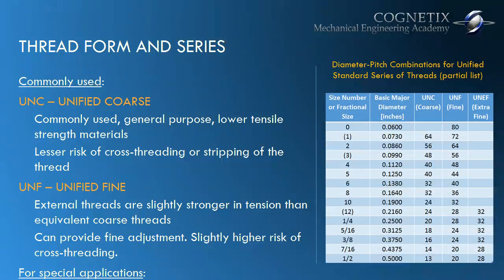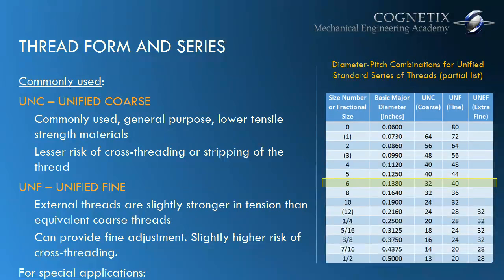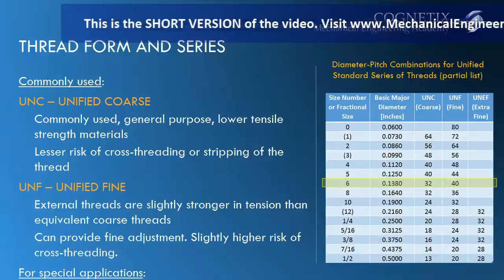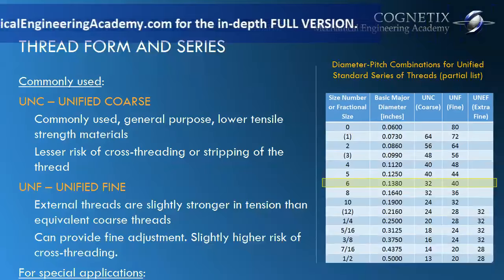The table that we see on the right shows that you cannot simply choose a pitch at random and match it up to a screw size. There are diameter-pitch combinations that are part of the Unified Standard, and this list shows some of them. Looking at, let's say, number 6 — we have a number 6 screw, which has a major basic diameter of 0.138 inches. If you are designing a threaded feature with a number 6 thread and you want coarse threads, you would choose 32, so your call-out would say number 6-32.